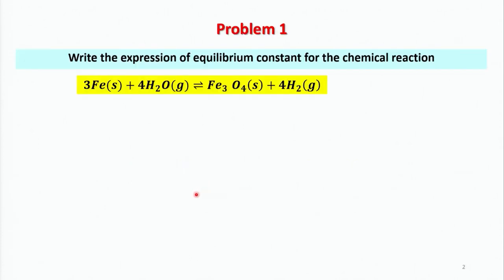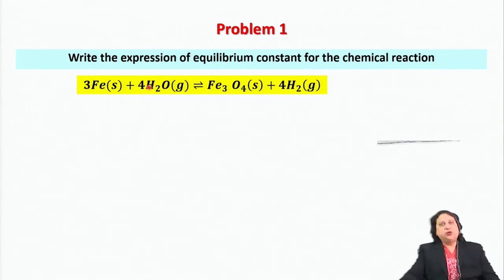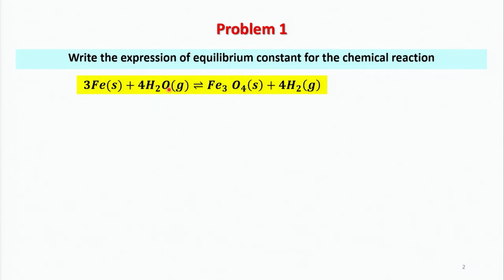The first problem is as follows: write the expression of the equilibrium constant for the highlighted chemical reaction. In this reaction, 3 moles of solid iron react with 4 moles of water vapor, giving rise to Fe₃O₄ solid and releasing 4 moles of hydrogen gas. How do we follow thermodynamic convention and write down the expression for the equilibrium constant?